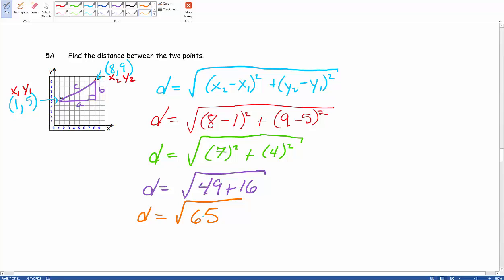Now, if you punch that into your calculator, you would end up with about 8.06. So for me, I would take either one of these two answers. Again, that is our chapter 1 target 5A.